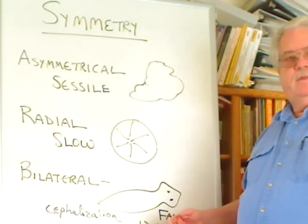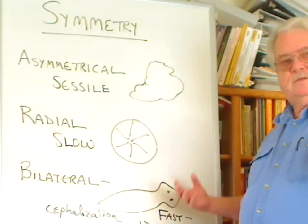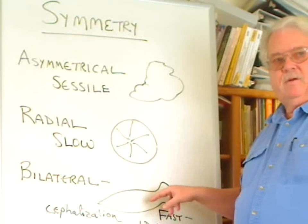Once we get on up into things like snails, grasshoppers, earthworms, humans, etc., we're primarily dealing with bilateral symmetry.